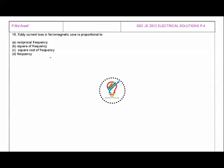Hello friends, welcome to my YouTube channel. In this session we will continue our previous SSC JE 2012 Electrical Solutions Part 4. The question on the screen is: eddy current losses in a ferromagnetic core is proportional to?